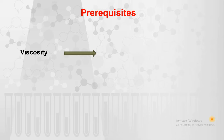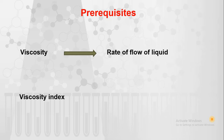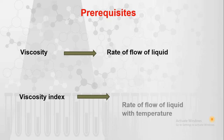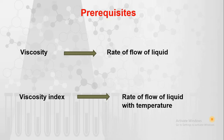Prerequisites. As you know, viscosity is nothing but the rate of flow of liquid. Viscosity index may be a new term for you — it is the rate of flow of liquid with respect to temperature. As temperature increases, viscosity decreases. This is nothing but the viscosity index.